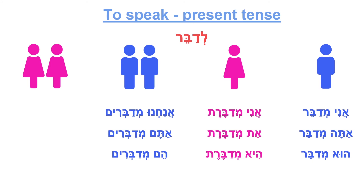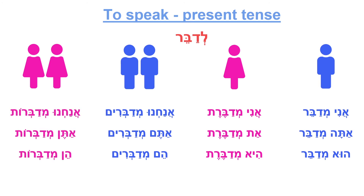Feminine plural: Anachnu medabrot, Aten medabrot, Hen medabrot. We are talking, you girls are talking, they are talking. To summarize, the four conjugation forms are: medaber, medaberet, medabrim, medabrot. And this is the conjugation of the verb ledaber.